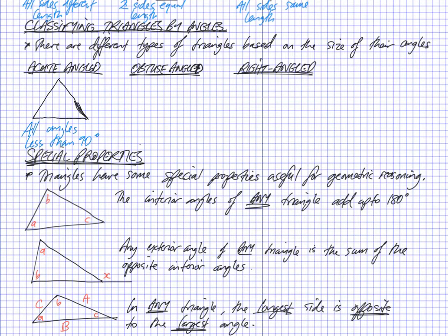An obtuse angled triangle is a triangle where one of the angles is obtuse. So, well, one of the angles is between 90 degrees and 180 degrees. So an obtuse angled triangle would be sort of like that. And this here is the obtuse angle.